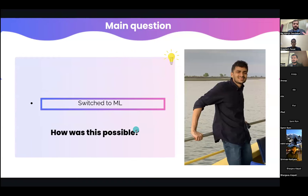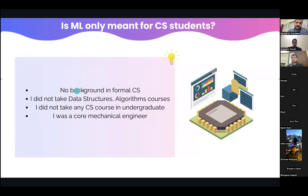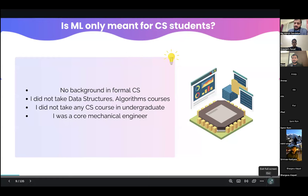One myth I want to break right at the start: I used to think that because I'm not a computer science graduate and hadn't taken data structures and algorithms, I wouldn't be good enough for machine learning. I had the insecurity that ML is only meant for CS students — but that is absolutely not true. I had no background in formal CS, no data structures or algorithms courses, I was a core mechanical engineer. ML is not only meant for CS students.